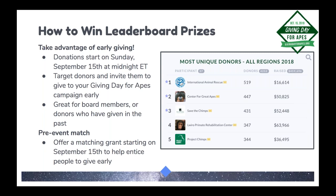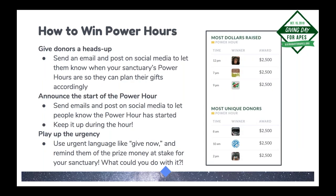One strategy to build up early donations is using a pre-event matching grant. As covered in the last webinar, a matching grant attaches an incentive to giving early by offering to match donations received. This can generate interest leading up to the event, so you start October 15th with money already in the bank. If you missed that webinar, it's available in the nonprofit toolkit.